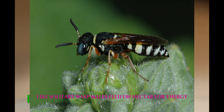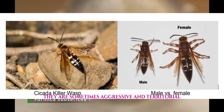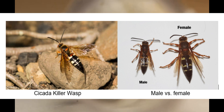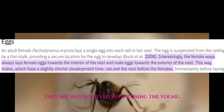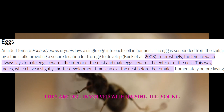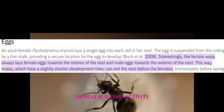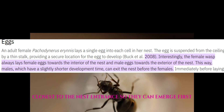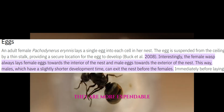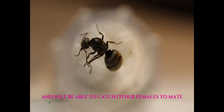The ancestors of ants and bees were probably solitary wasp-like. Solitary wasp males feed on nectar for energy and actively look for females. They are sometimes aggressive and territorial, and are not involved with raising the young or nest-building activity. Typically, these male wasps are laid last, closest to the nest entrance, so they can emerge first. They are more expendable, and will be able to catch other females to mate.